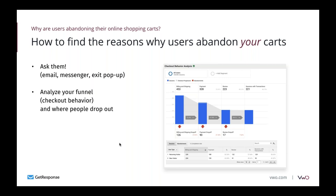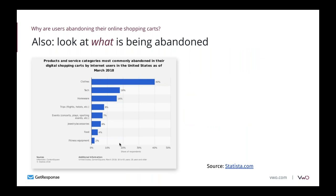It's also useful to analyze the funnel. If you set up your goals properly in Google Analytics, you can check at which point people are dropping out. This is an example from Google Merchandise Store's demo account, which anyone can look into — I highly recommend it. It's also important to look at what is being abandoned — not just that people abandon, but which kind of products, since your strategy could be different for different product categories.